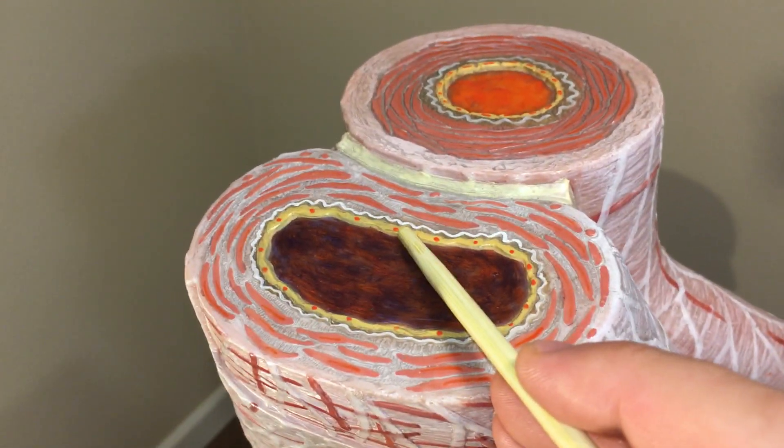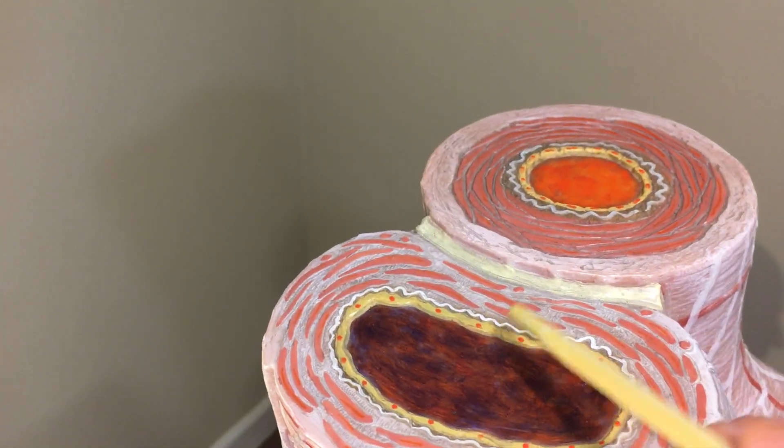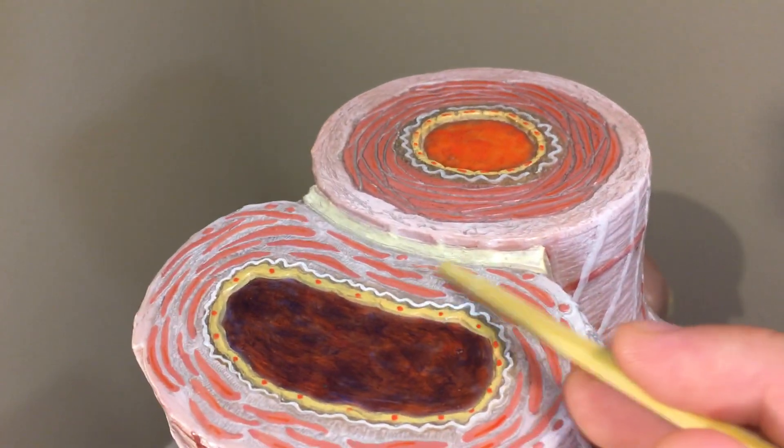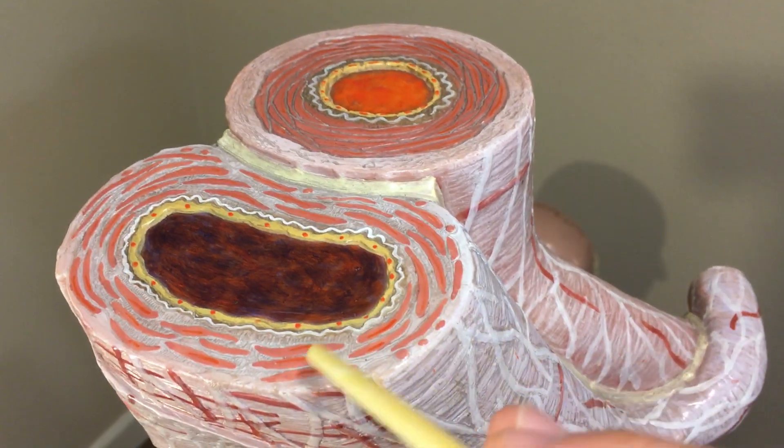So the vein, you have the endothelium. That would be your tunica interna. Then you have your tunica media right here. A little bit of smooth muscle, not as much.